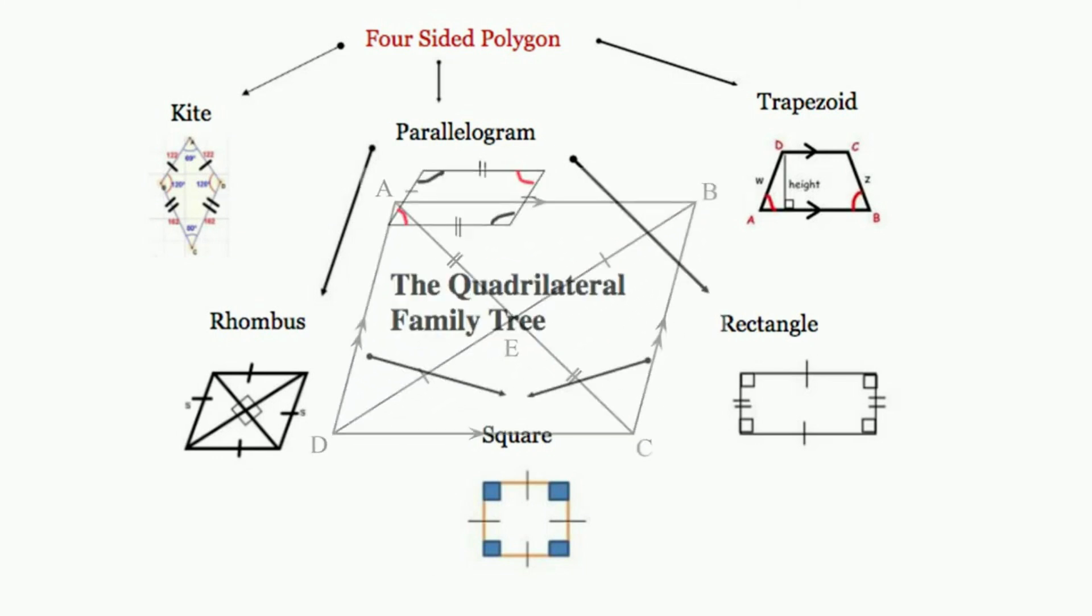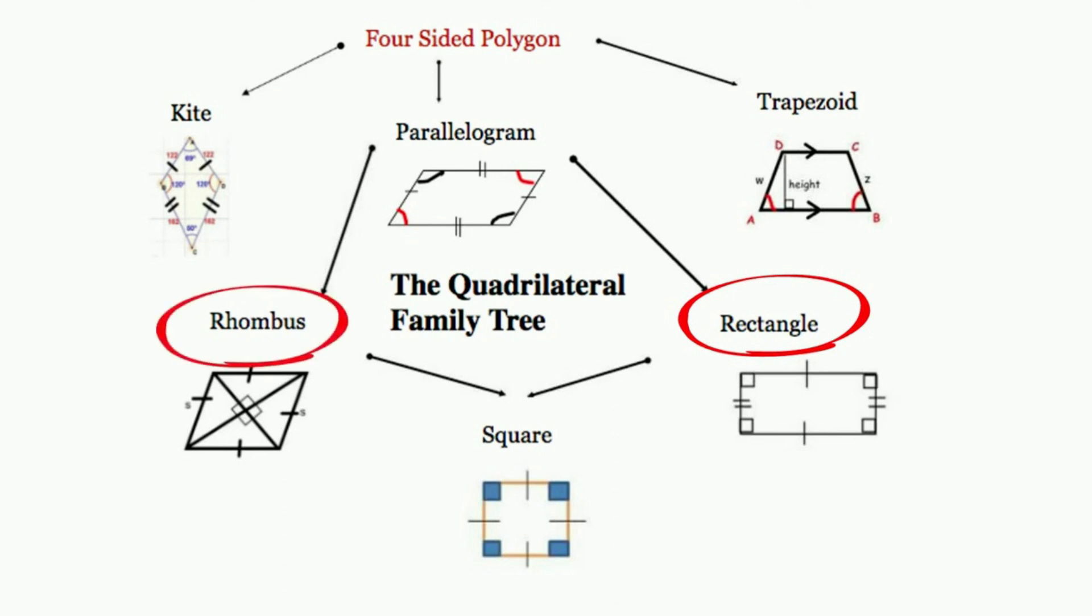A rectangle, which is a parallelogram, has two pairs of parallel sides but it has four congruent angles. A rhombus has four congruent sides, but only the opposite angles are equal.